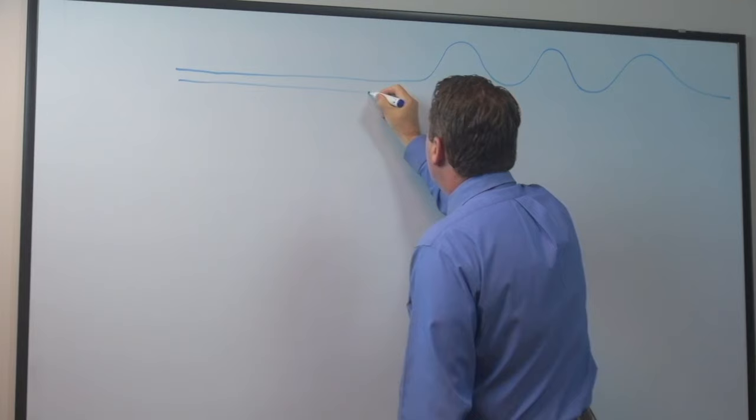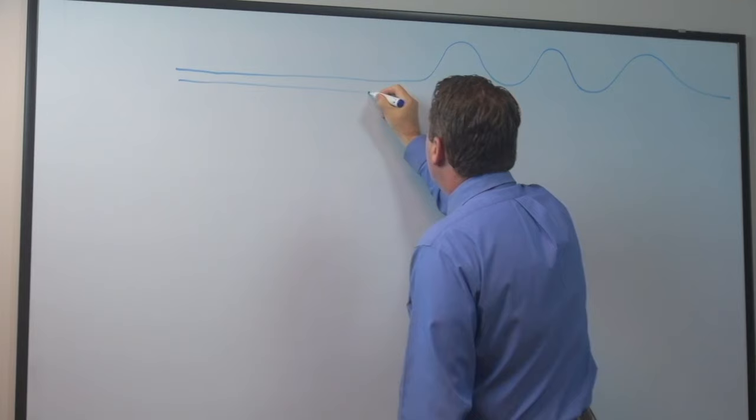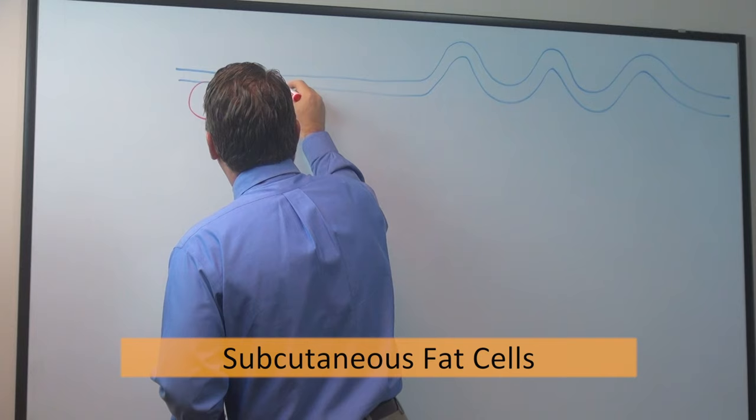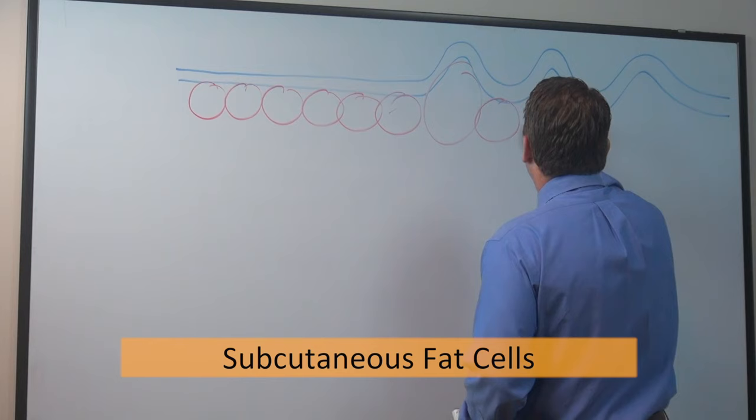And then right below the epidermis is another layer of skin called the dermis. And then underneath both the epidermis and the dermis is what we call subcutaneous fat cells, meaning sub, meaning right below, cutaneous, meaning the skin. So subcutaneous fat cells.